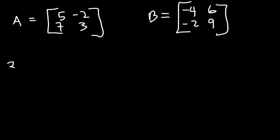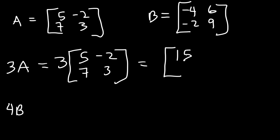Now, let's find the values of 3A and 4B. So 3A, all we need to do is multiply matrix A by 3. Every element in this matrix, we're going to multiply it by 3. So 3 times 5 is 15, 3 times negative 2 is negative 6, 3 times 7 is 21, 3 times 3 is 9. And that's it.